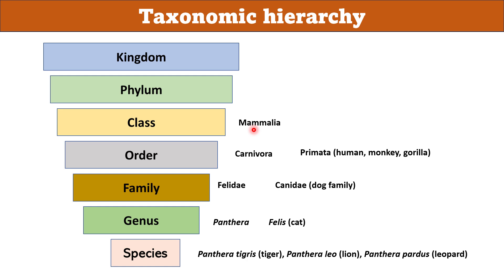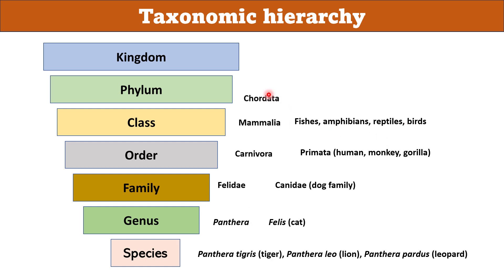Certain similar classes come in the same phylum. Class Mammalia, fishes, amphibians, reptiles, and birds are all different, but they have some similarities — since they all have notochords, hence they come in the same phylum Chordata.